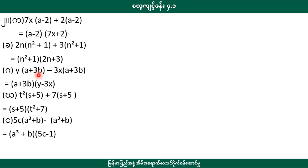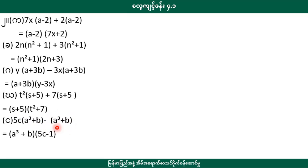Y into A plus 3B. Minus 3A into A plus 3B. A plus 3B. Y minus 3A. D squared into S plus 5 plus 7 into S plus 5. D squared plus 7. 5C. E2 plus B. Minus E2 plus B. 5C minus 1.